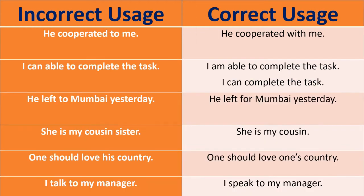'He cooperated to me' — the correct usage is 'he cooperated with me.' 'I can able to complete the task' is wrong — it should be 'I am able to complete the task' or 'I can complete the task,' because 'can' is equal to 'able' and they wouldn't come side by side in the same sentence.